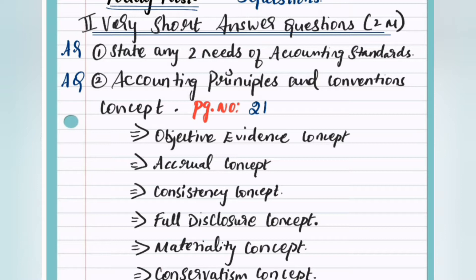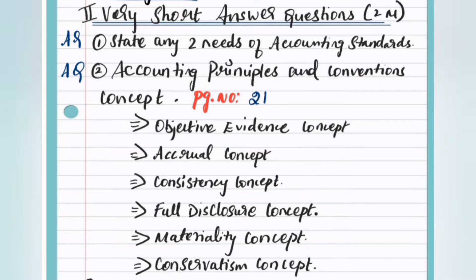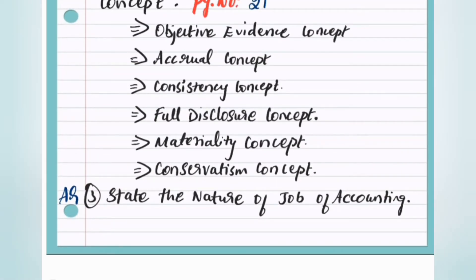The next additional question is on page number 21 about accounting principles and conventions concept. This is not only for two marks, it's also for one mark, so one mark questions can also be asked from this topic.